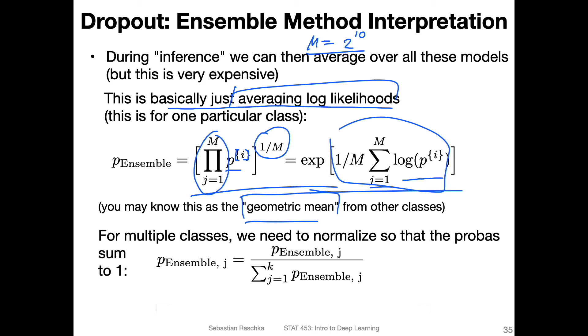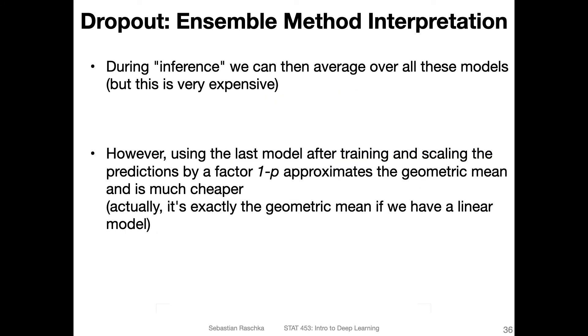And if we have multiple classes, more than binary classification, we also want to normalize these so that they sum up to one, because we have multiple classes. If we have multiple classes, we have multiple probability scores, and ideally, we want them to sum up to one. And the class label can then be obtained by considering the class with the highest probability.